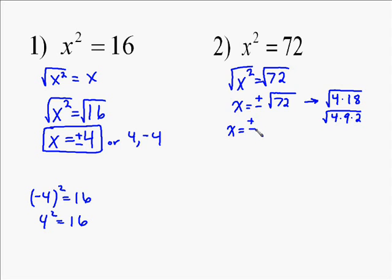The square root of 4 is 2, so we got plus or minus 2, or square root of 4 times square root of 9 times square root of 2, which is going to equal plus or minus 2 times 3, because square root of 4 is 2, and square root of 9 is 3, square root of 2.